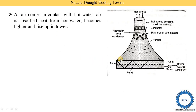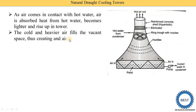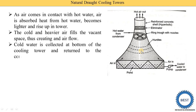Air enters from the bottom, absorbs heat energy from the water, and when it absorbs heat its density reduces — it becomes lighter air and moves upward. It is then discharged to the atmosphere from the top of the tower. The cold and heavier outside air fills the vacant space, creating continuous air flow. When this air moves upward, space is created and new air from the atmosphere takes its place — this way the continuous natural flow of air is maintained.